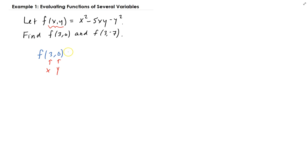So we're going to substitute these in. So you get 3 squared minus 5 times 3 times 0 minus 0 squared.